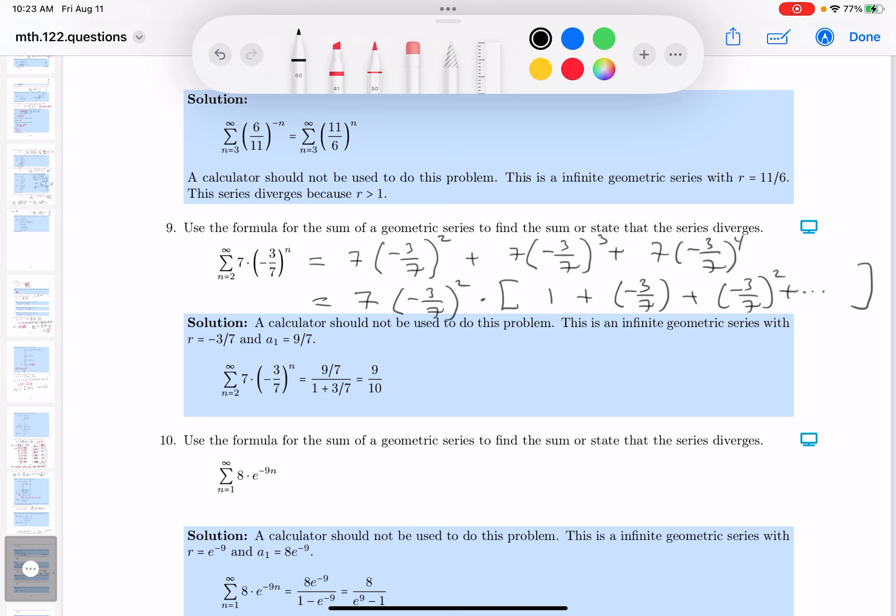Again, let me remind you about the geometric series. 1 plus x plus x squared and so on equals 1 over 1 minus x, provided the absolute value of x is less than 1. What I know about this is the absolute value of minus 3 times 7s is 3 times 7s, and it's certainly less than 1, so I can use the formula. Let's write it down. You get 7.